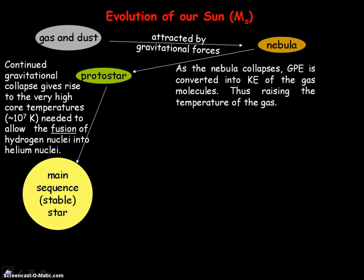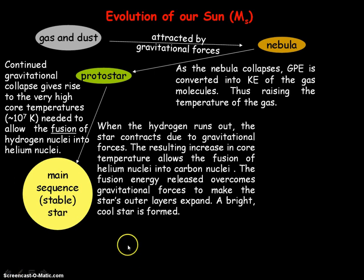Looking at the evolution of our Sun after the main sequence stage: when the hydrogen runs out, there will be no more fusion of hydrogen nuclei into helium nuclei. The star will contract due to gravitational forces, and the resulting increase in core temperature will allow the fusion of helium nuclei into carbon nuclei. The fusion energy released can then overcome the gravitational forces.